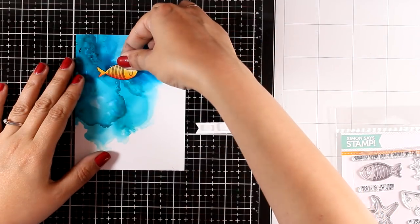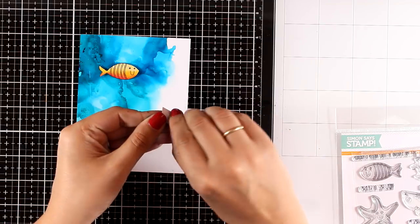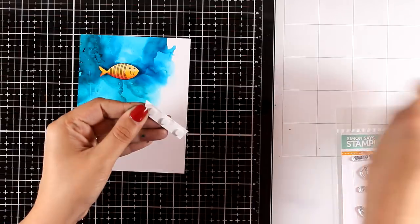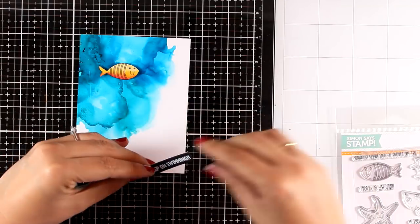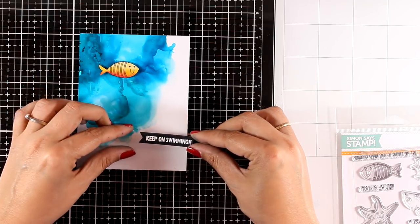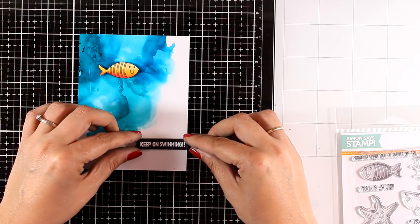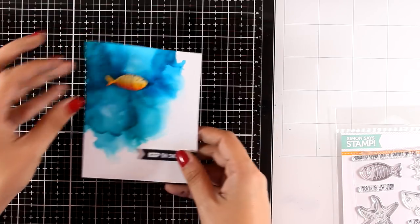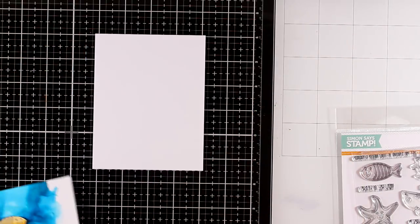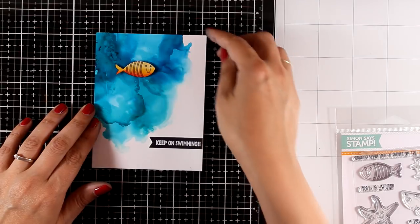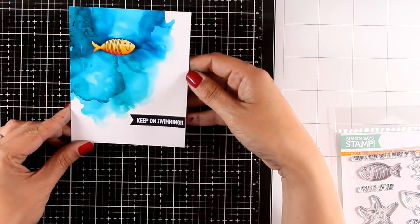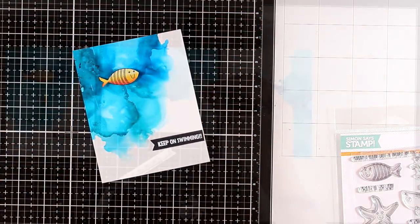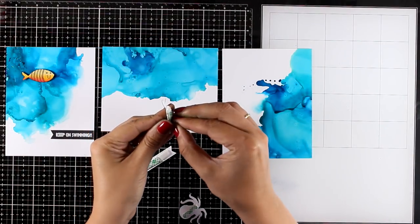Now I'm going to put my card together. I'm using some foam squares at the back of the fish and at the back of my sentiment. Off camera I prepared this sentiment, it says Keep On Swimming and it comes from the same stamp set. I just white embossed it on a piece of black cardstock and I'm going to stick this yupo paper directly on top of a card base.